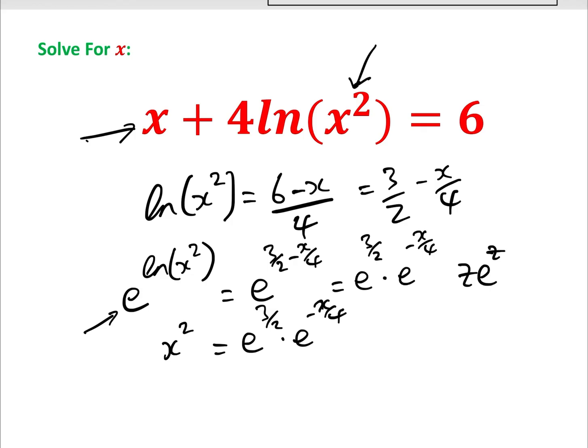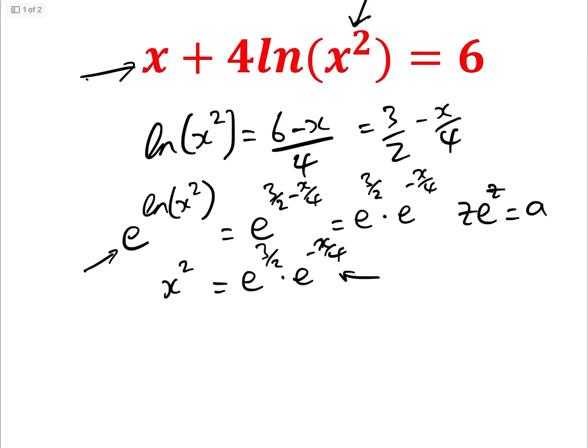Remember, we're trying to get it into the form z e to the z equals a for some constant a. So we clearly have to get the e to the minus x over 4 on the other side. So that gives us x squared e to the x over 4 equals e to the 3 over 2.